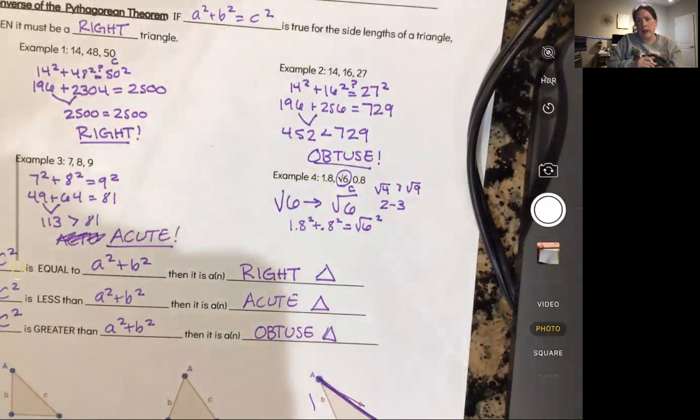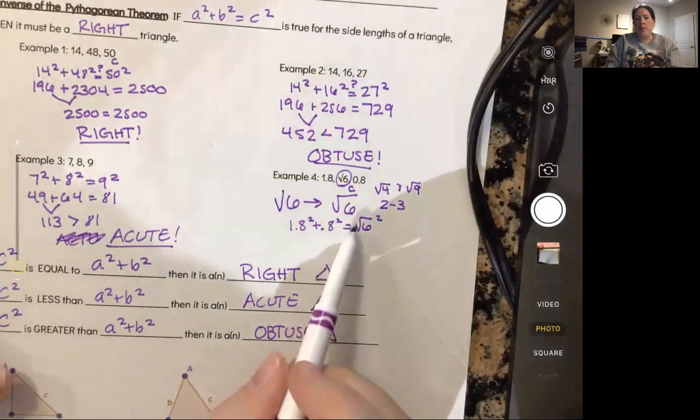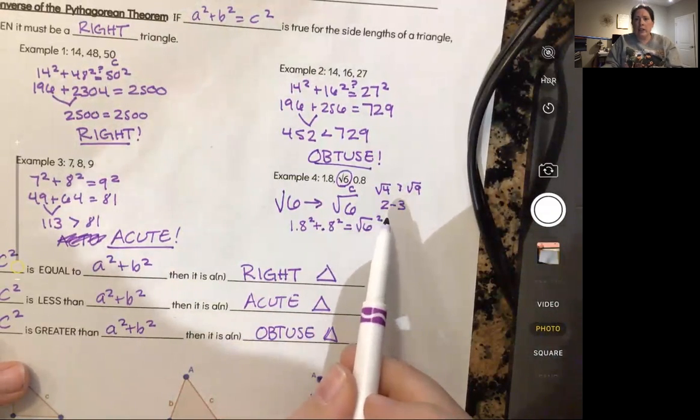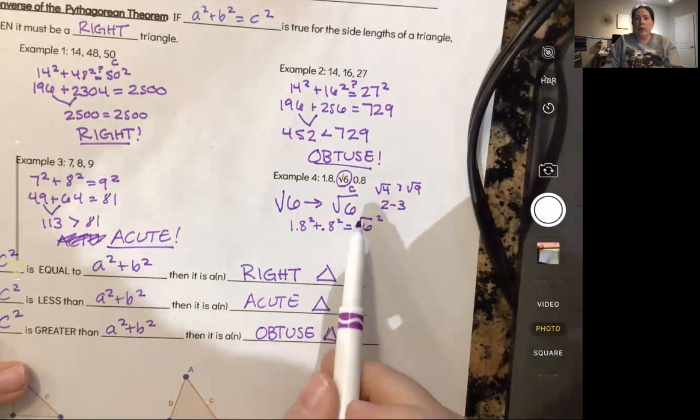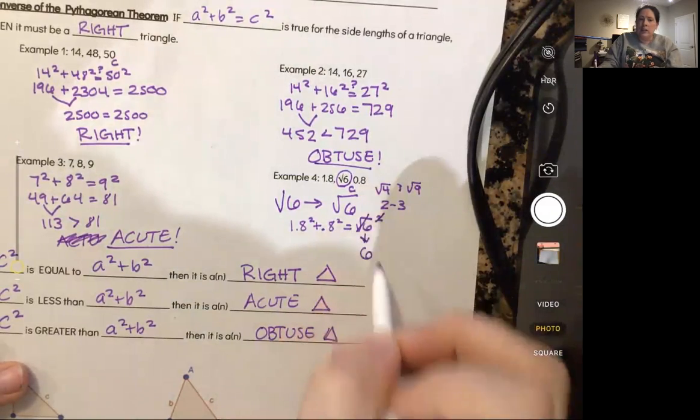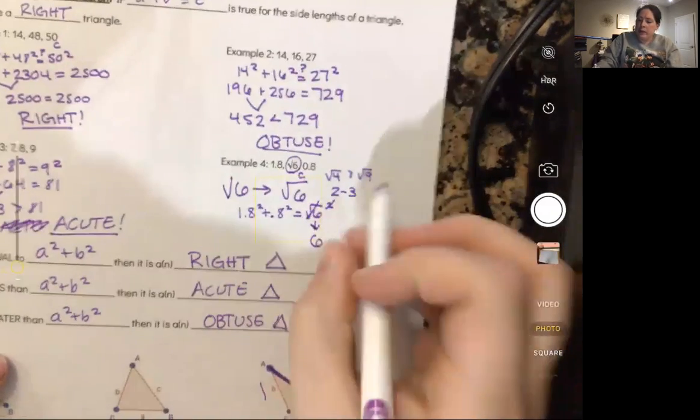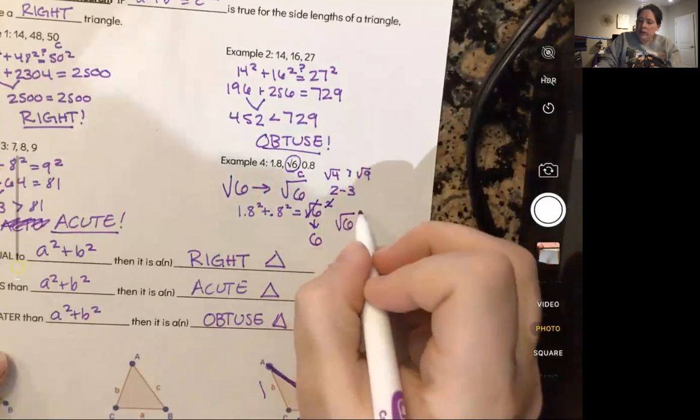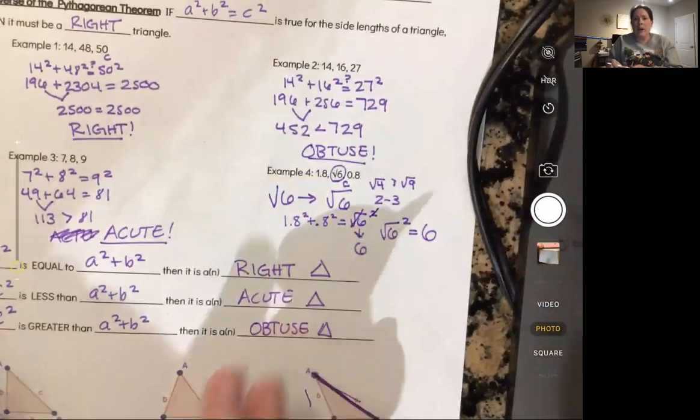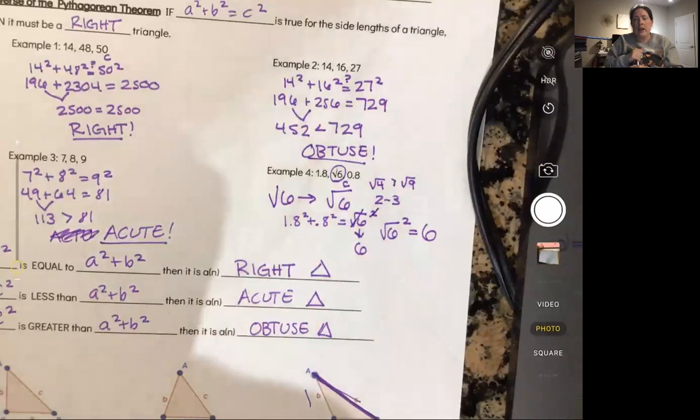When you are taking this guy and you are squaring it, you need to realize if I take the square root of six and I square it, these cancel out and then I'm just left with six. So the square root of six squared is equal to six. Please remember that as you go through today's lesson.